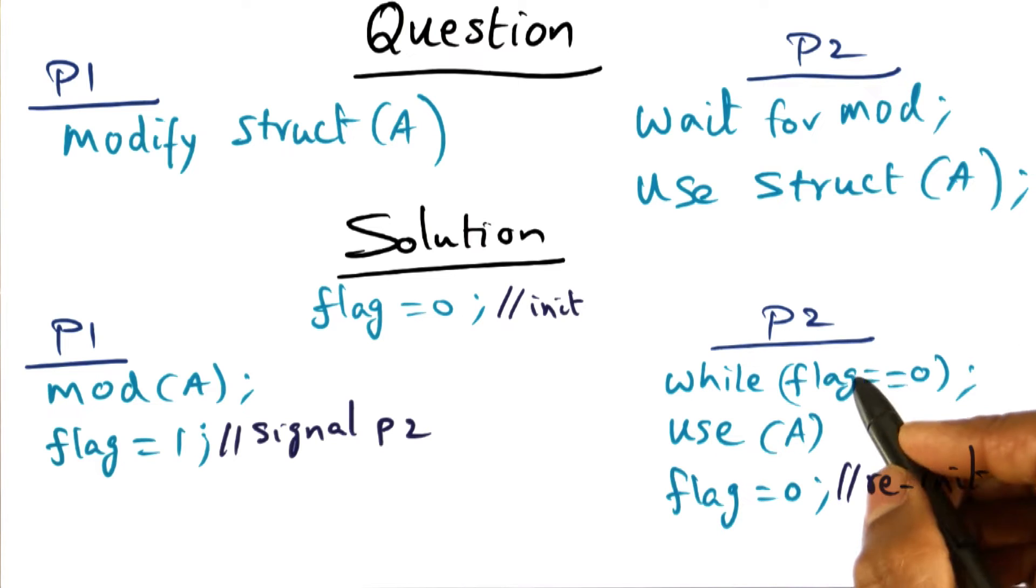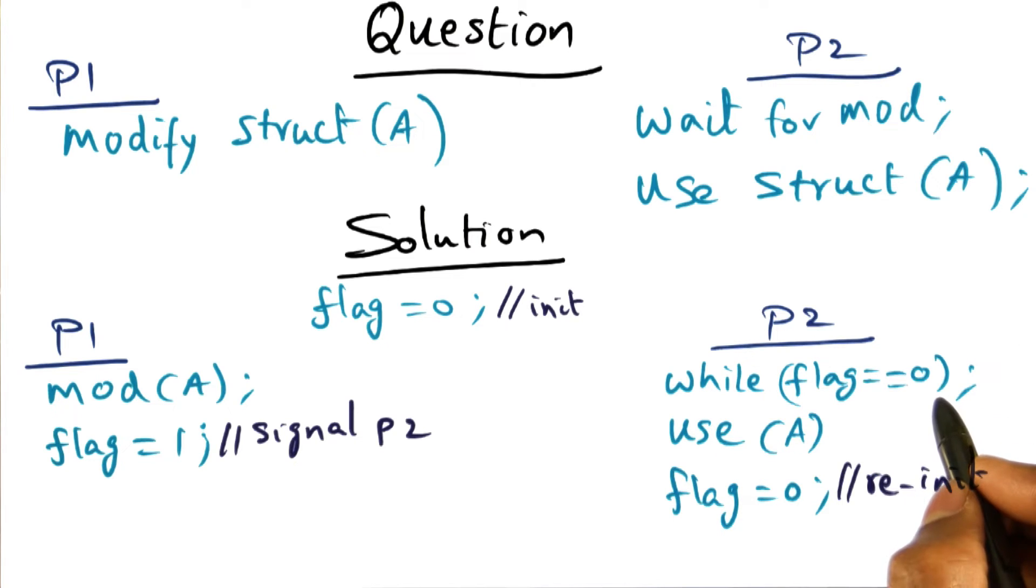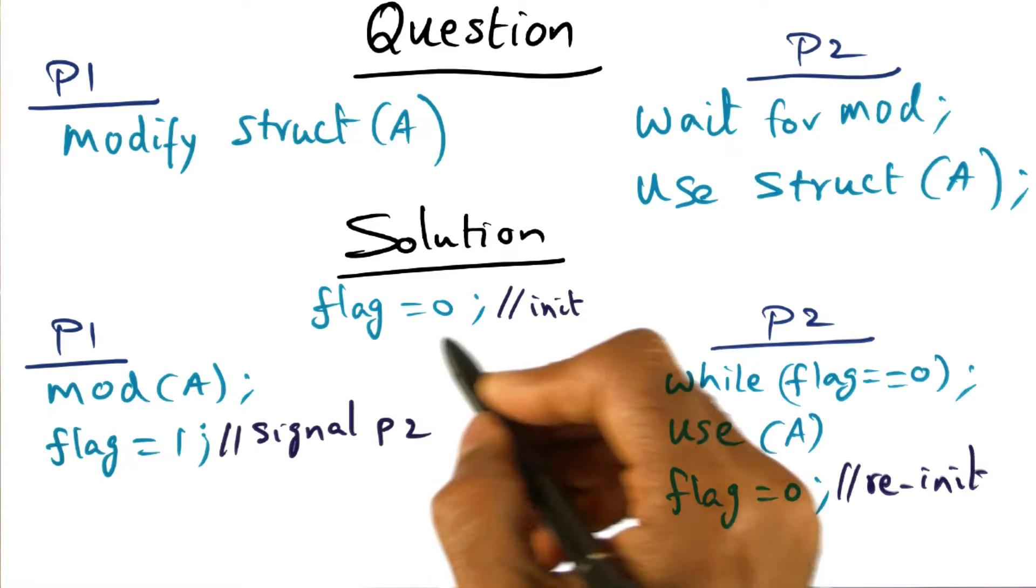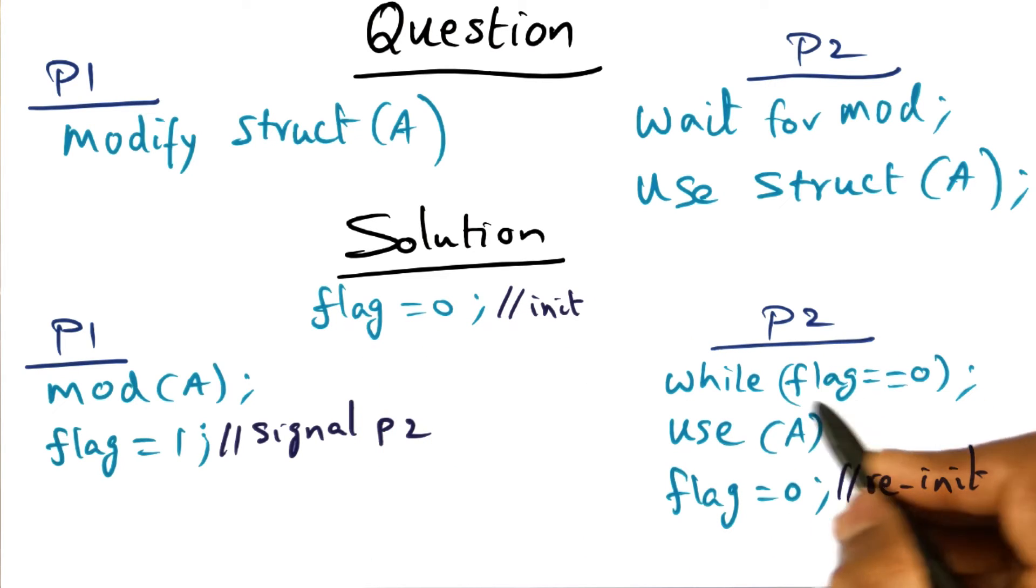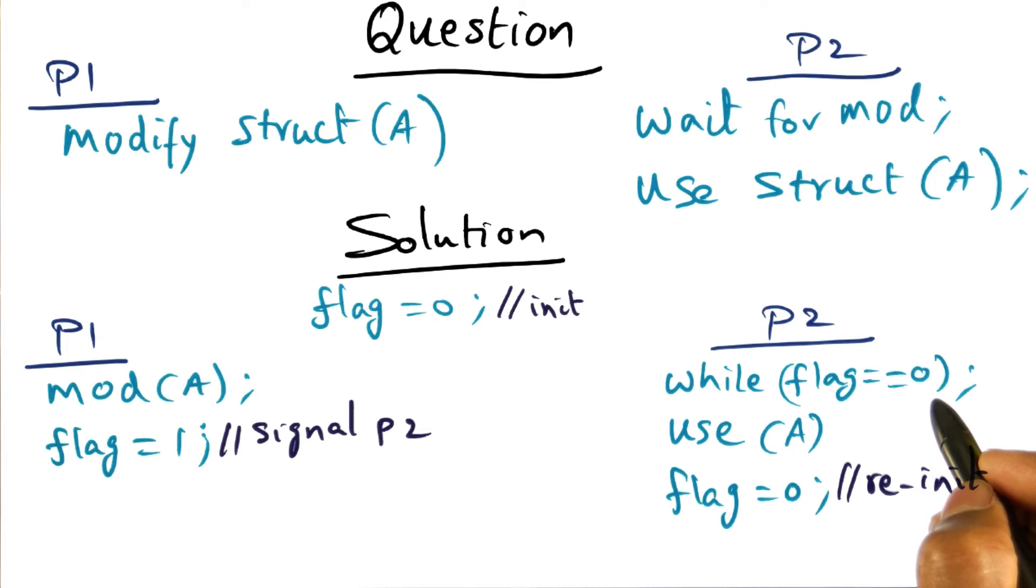Now what is P2 doing? Well, P2 is basically waiting for this flag, which initially the flag was initially 0. And basically the process of P2 is waiting for this flag to change from a 0 to a 1.